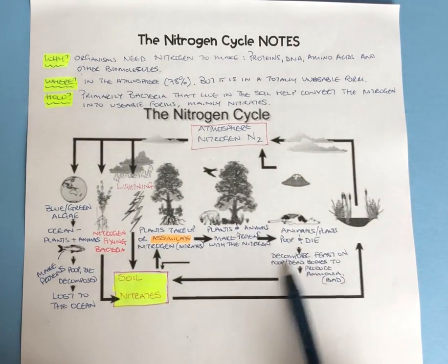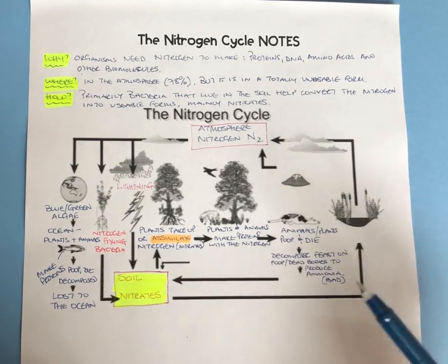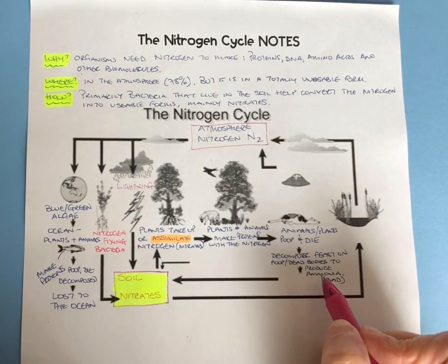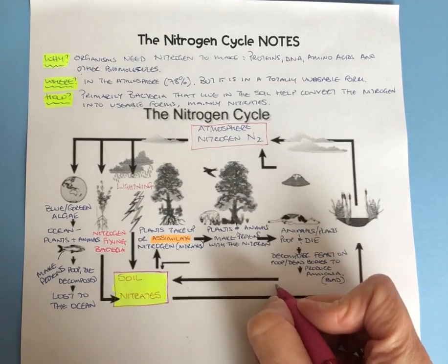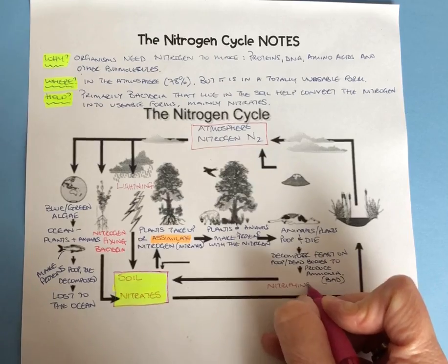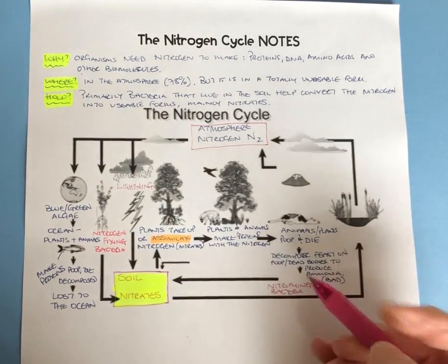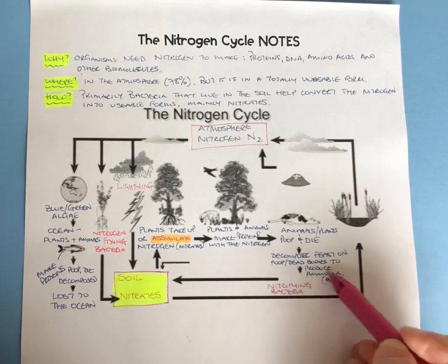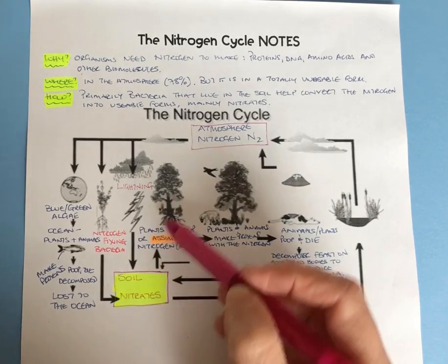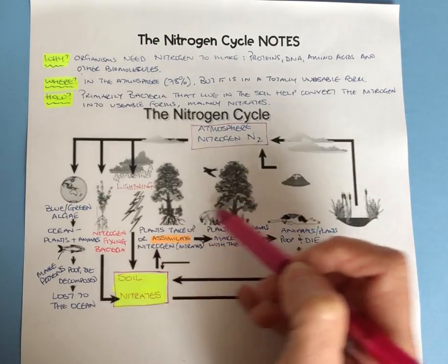These decomposers produce ammonia, but luckily we have another type of bacteria — the nitrifying bacteria — which turn this bad ammonia into good nitrates, which are then taken up by the plants, which are then eaten, and so on. You can see this internal cycle going on.